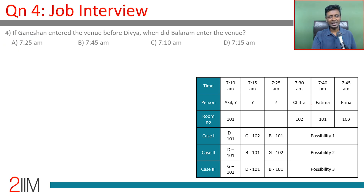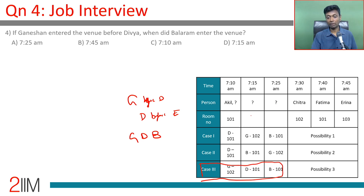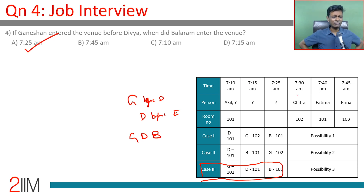Question four: If Ganeshan entered the venue before Divya, when did Balram enter? We know D comes before B in 101. With G before D, the order becomes G, D, B — placing G at 7:10, D at 7:15, and B at 7:25. So Balram entered at 7:25 AM.